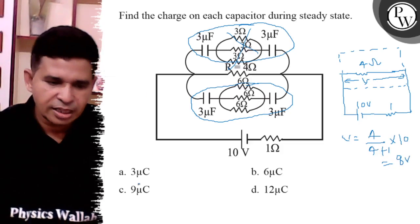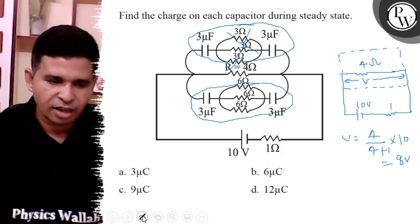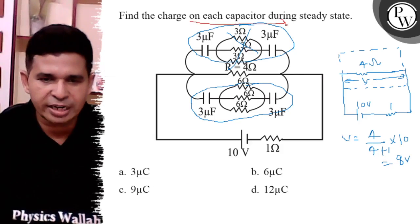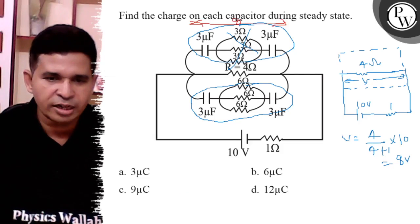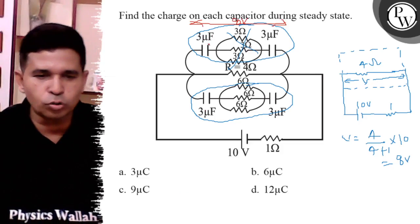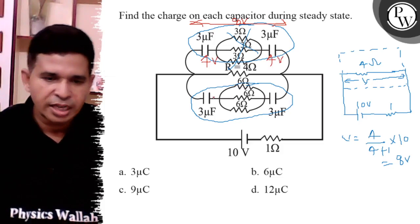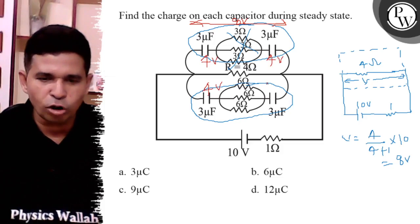So, 8 volt is there across two capacitors. Here to here, voltage drop is 8 volt. It is divided into two capacitor, 3 microfarad. So, here the voltage is 4 volt. Here the voltage is 4 volt.